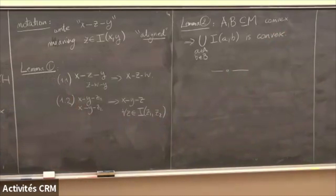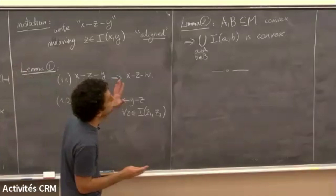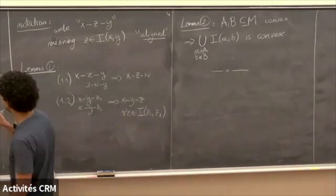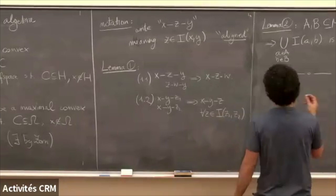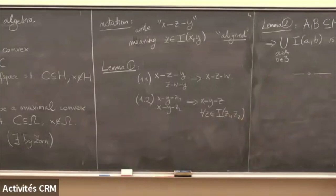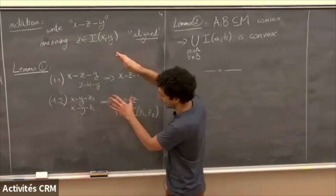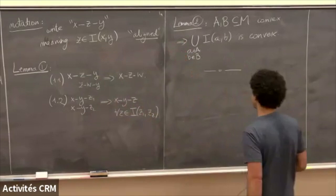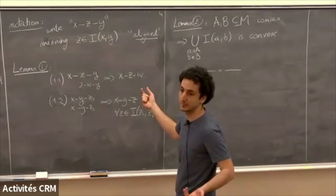Lemma 2 is a way of constructing convex hulls: if A and B in M are convex, then the convex hull of their union is the set of medians of points with one endpoint in A and one in B. You don't need to iterate — if A and B are convex you just do it once. These are in the exercises.